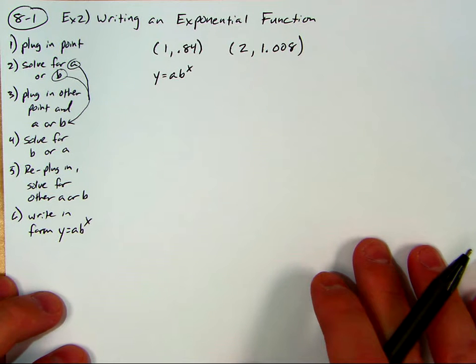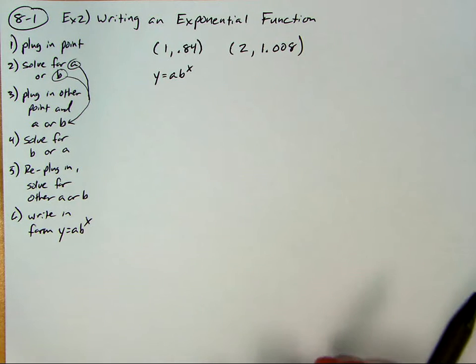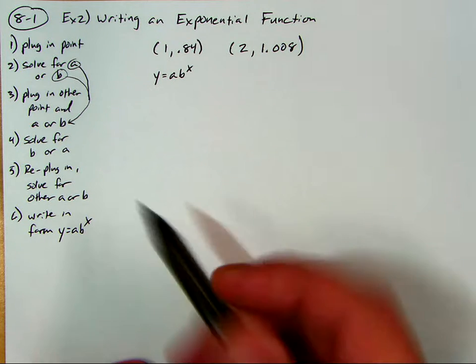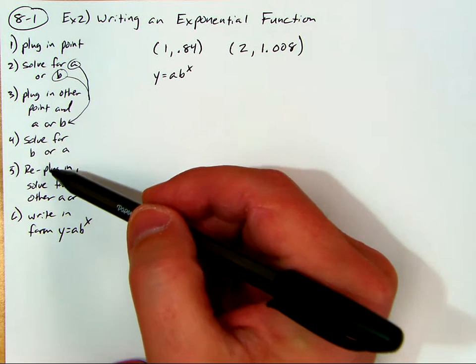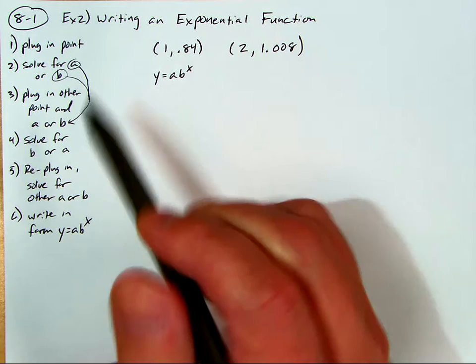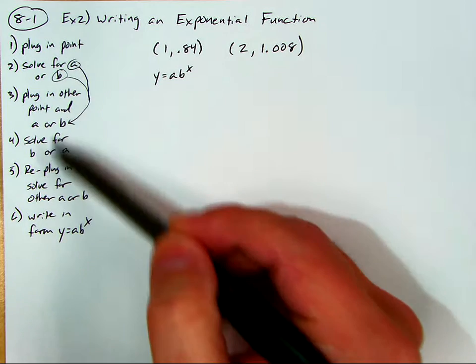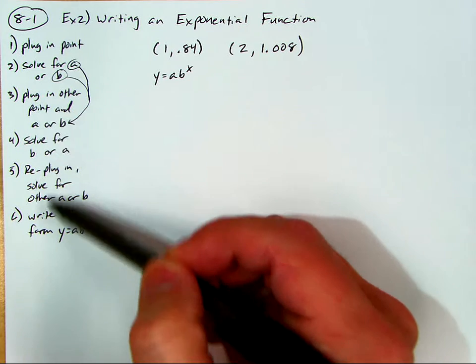Okay, here is 8-1 example 2, writing an exponential function. This one is heavy on the calculations. Look at all the general description of steps. You can get lost in the math here if you're not careful. But the general concept, and this is kind of explained here in words.